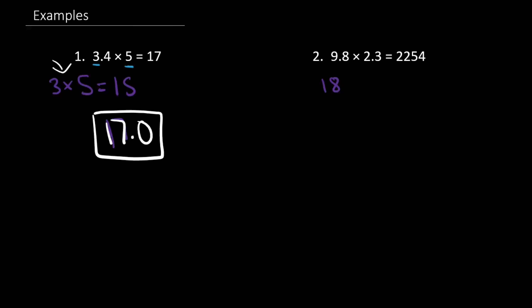What about 2,254? Let me write that down. What if our decimal point is after the 5? Well, is that close to 18? No, it is not. What about after the second 2? 22.54 — is that close to 18? Well, yes it is, it's just about 4-point-something away. What about 2.254? Is that closer to 18? No. 22.54 is closer to 18. So we can say our answer is 22.54.